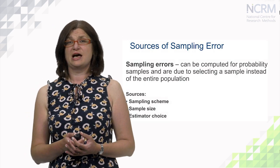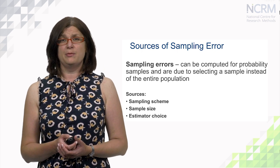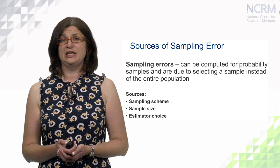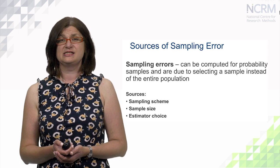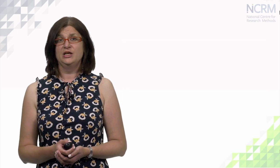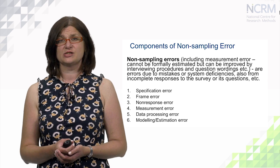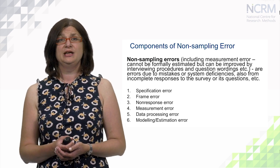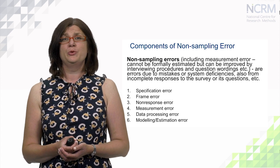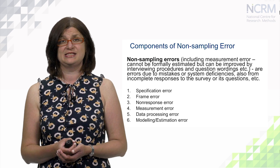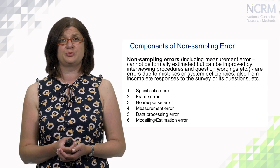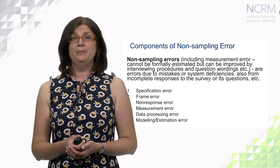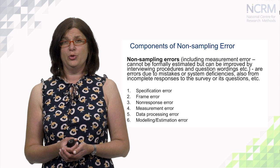Sampling errors are errors which can be computed for probability samples only and are due to selecting a sample instead of the entire population. Sources of sampling error include sampling scheme, sample size, estimator choice, and other factors. Non-sampling errors are errors due to mistakes or system deficiencies, and can also come from incomplete responses to surveys or their questions. Non-sampling errors include measurement errors, which cannot always be formally estimated, but can be improved by, for example, improved interviewing procedures or improved question wordings in questionnaires.